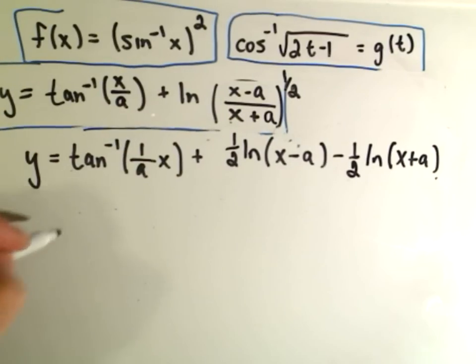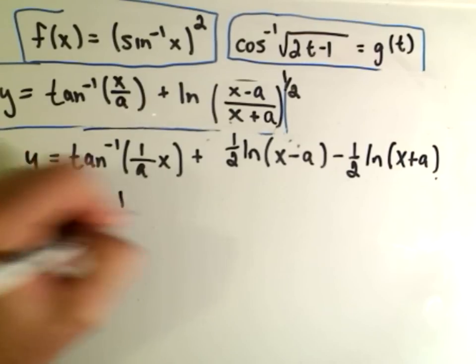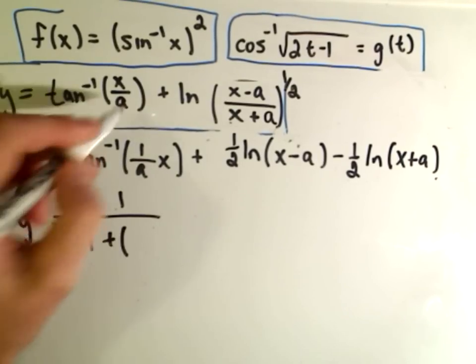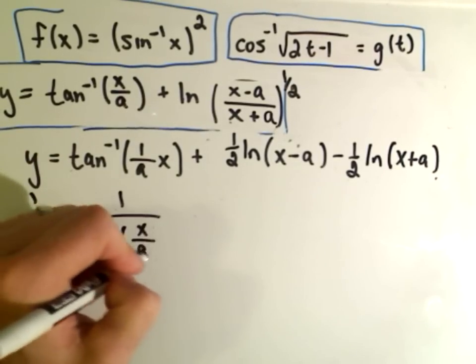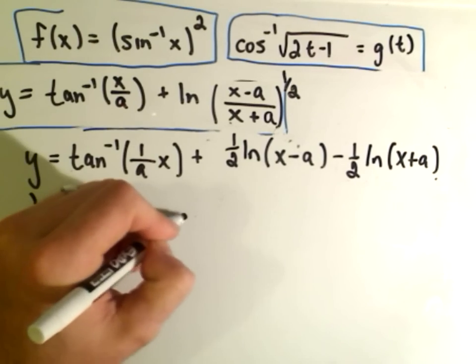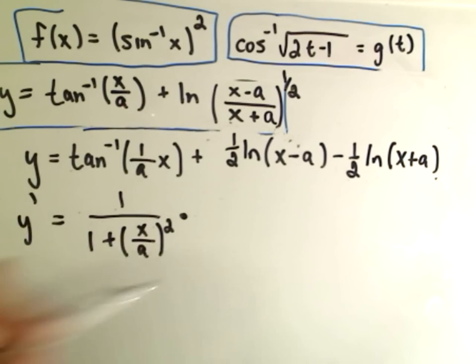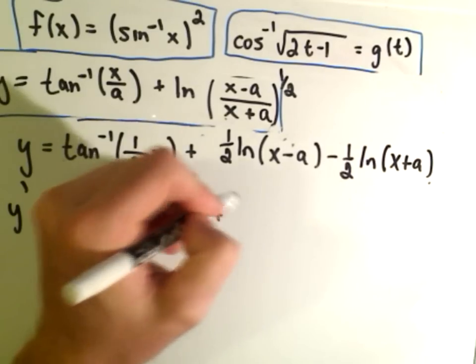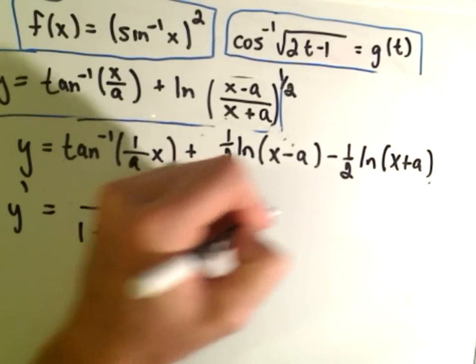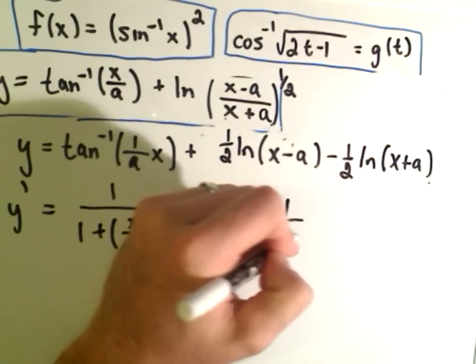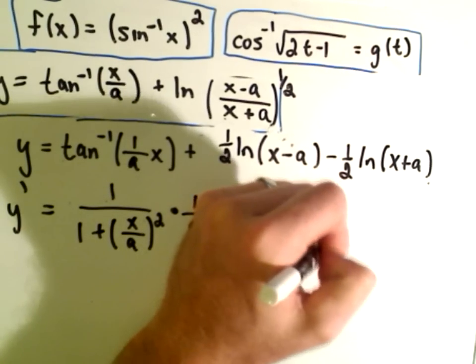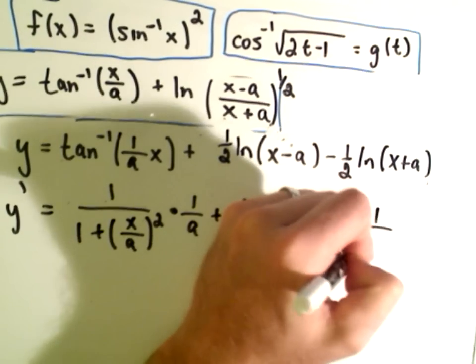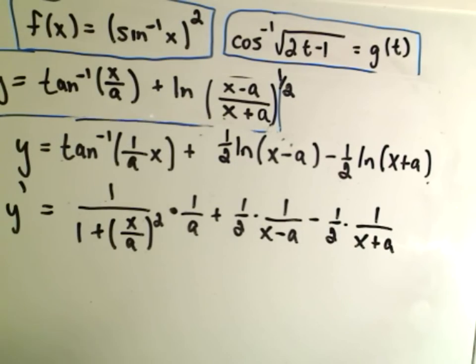Okay, so when we go to take the derivative, we get 1 over 1 plus the stuff squared. So we'll get x over a quantity squared. Then we have to multiply that by the derivative of the inside, which is just going to be 1 over a. The derivative of the natural logarithm will get 1 half times 1 over x minus a, minus 1 half times 1 over x plus a. Okay, so there's our derivative. We could clean this up a little bit, it looks like.